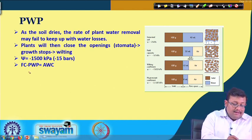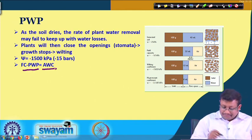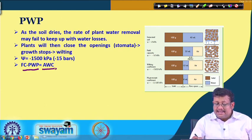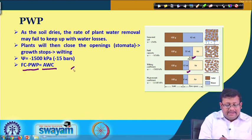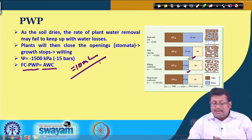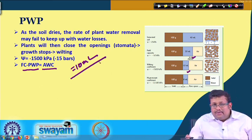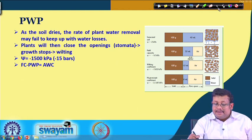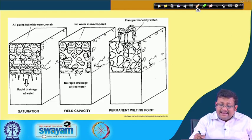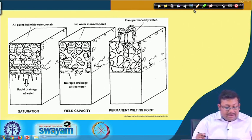Again, the difference between field capacity and permanent wilting point is the available water capacity. For example, if field capacity holds 20 ml of water and at permanent wilting point only 10 ml remains, the available water content is 10 ml for that soil. This gives a basic understanding of the implications of field capacity and permanent wilting point for plant growth. A summary slide shows the differences between saturation, field capacity, and permanent wilting point.